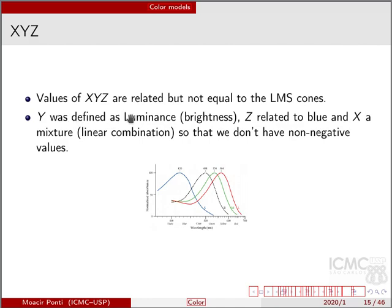XYZ is related but not equal to the long, medium and short cones that are the names of the cones that are related to red, green and blue. In this system, Y was defined as luminance or brightness, Z related to blue but not exactly, so it's mostly brightness blue but also has other combinations, and X is a mixture or linear combination so that we don't have negative values in this system.